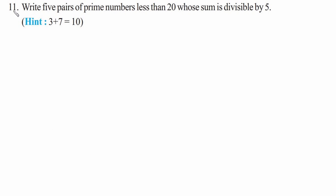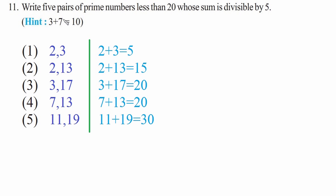Question eleven: write five pairs of prime numbers less than 20 whose sum is divisible by 5. A hint given is 3 plus 7 equals 10, which is divisible by 5. Other pairs: 2 plus 3 equals 5, 2 plus 13 equals 15, 3 plus 17 equals 20, 7 plus 13 equals 20, and 11 plus 19 equals 30, all divisible by 5.